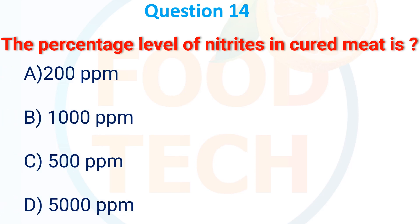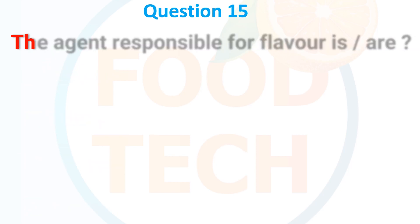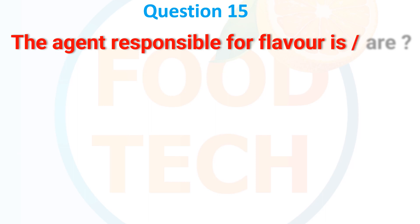The permitted level of nitrites in cured meat is: A. 200 ppm, B. 1000 ppm, C. 500 ppm, D. 5000 ppm. The answer is A. 200 ppm.